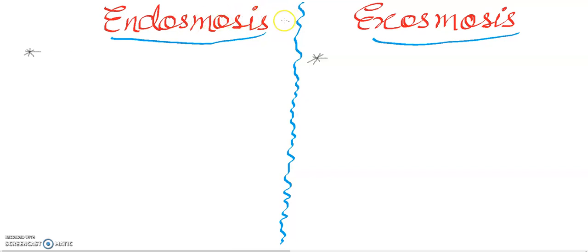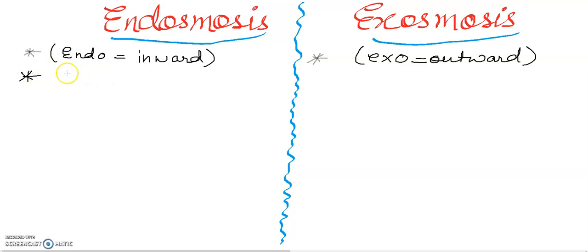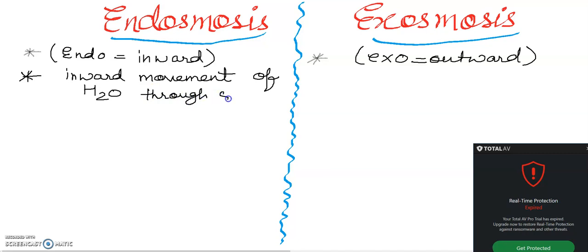In this video, I am going to give you a comparative chart. Endosmosis refers to the inward movement of water. If we talk about exosmosis, it is the outward movement — the inward or outward movement of water through a semi-permeable membrane (SPM).